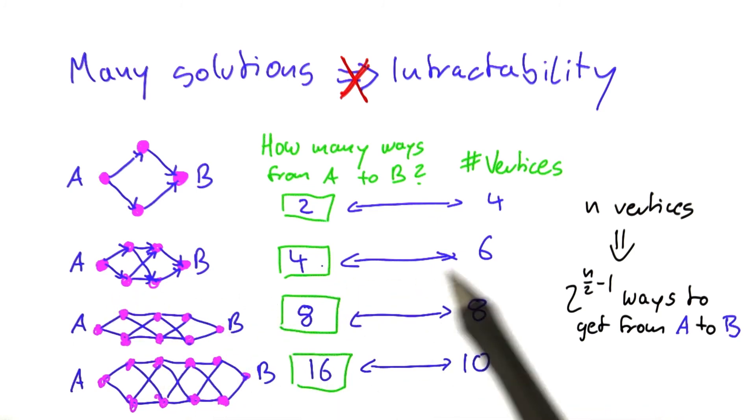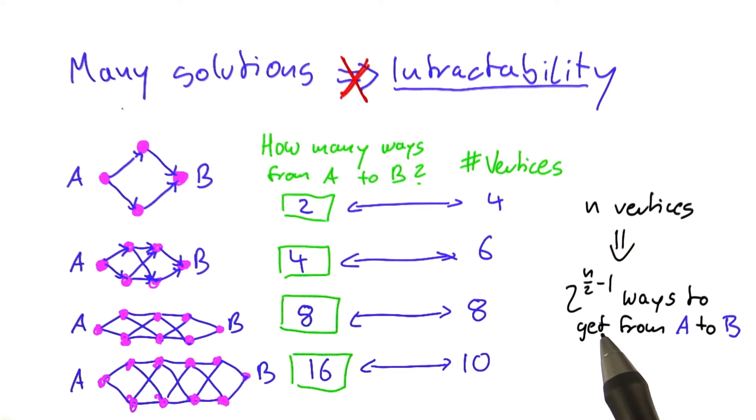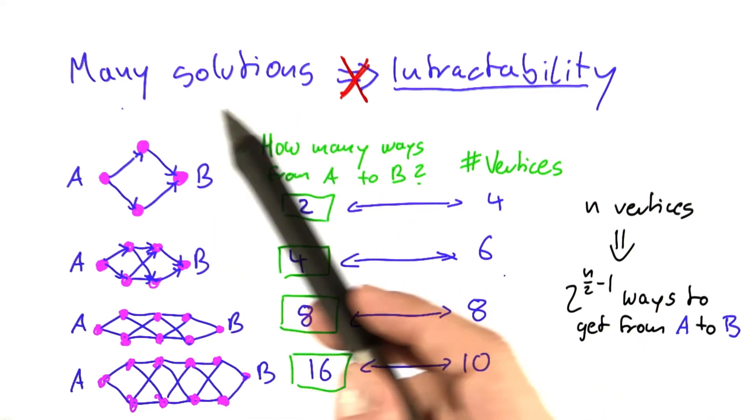So for vertex cover, clique, and independent set, if we want to show these problems to be intractable, it's not enough to point out that there's an exponential number of solutions, because that doesn't mean there can be no polynomial time algorithm.